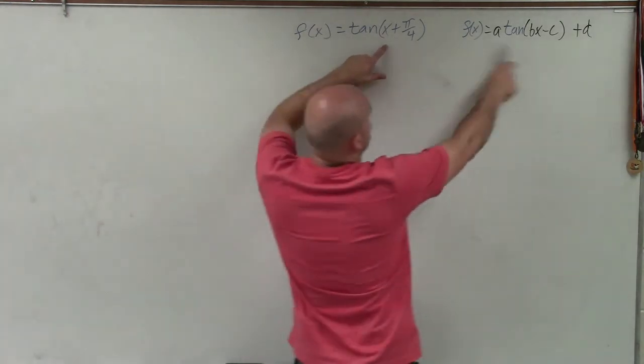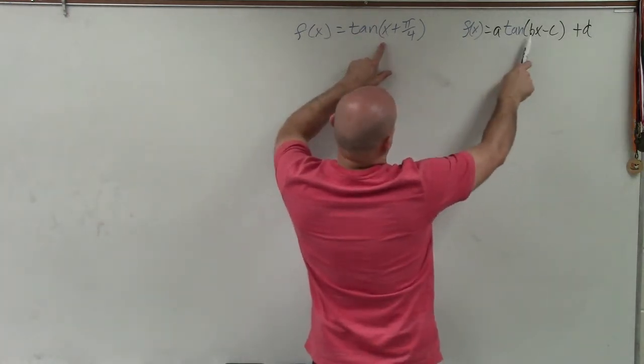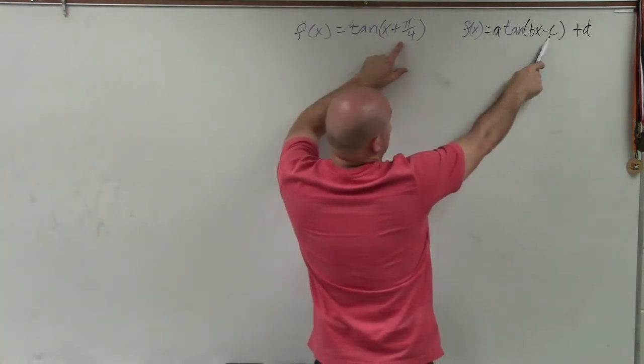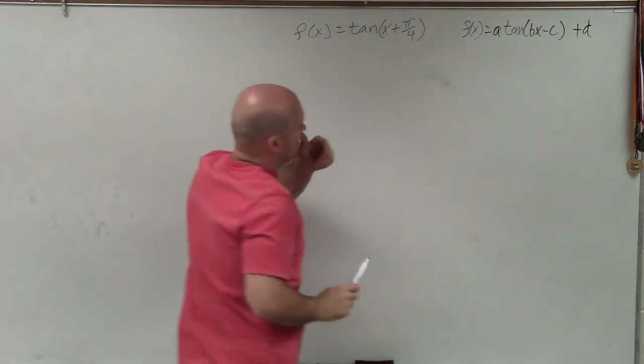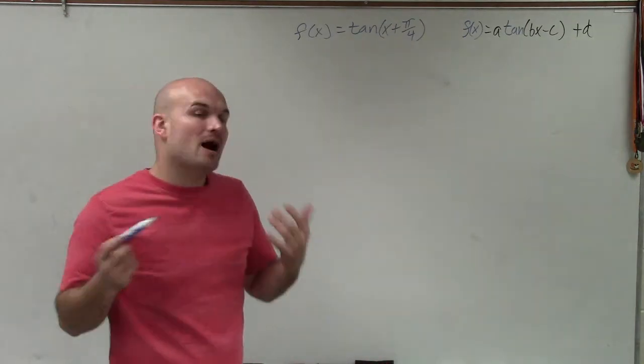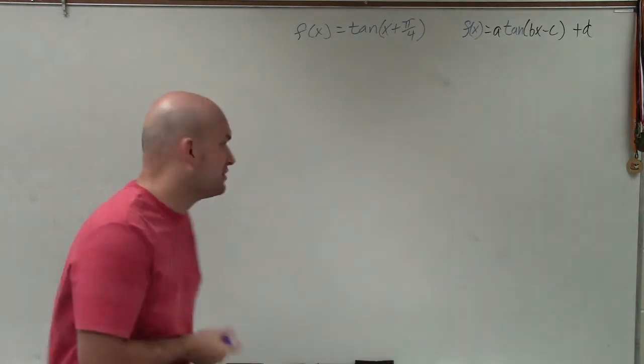You can see that really the only thing we have is we don't have an A or B, but we do have this C here, and there's no D. So let's see how that is going to affect it from our parent graph.